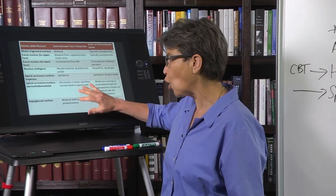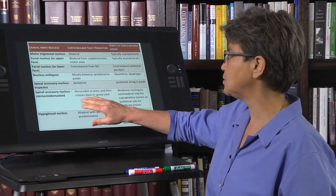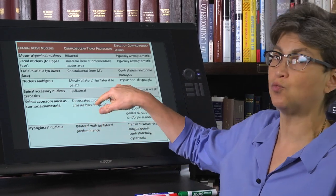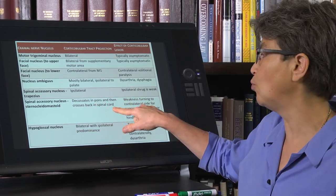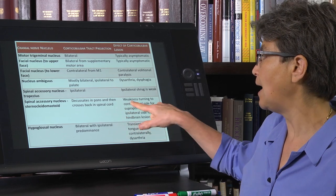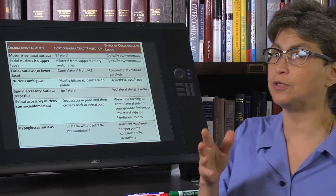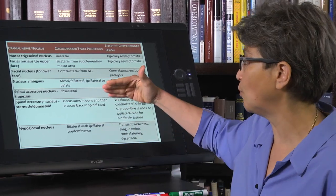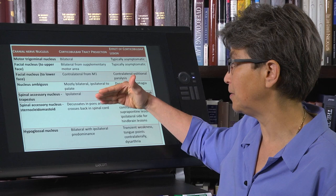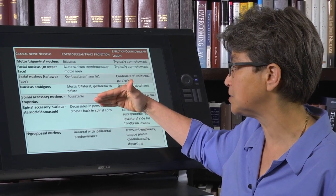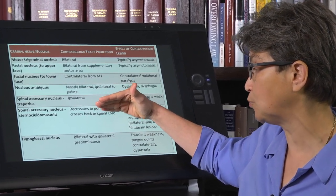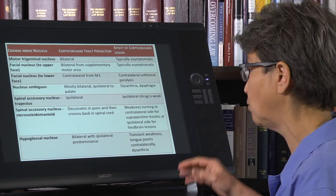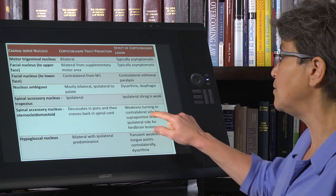There's a very bizarre situation with the sternocleidomastoid, which is that it decussates twice - once in the pons and once in the spinal cord. This leads to the side that is weak depending on whether it's cut above the pons, between the pons, or between the pons and the spinal cord. So which side it deviates to is going to depend on where the lesion is.